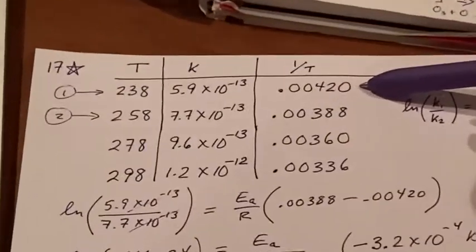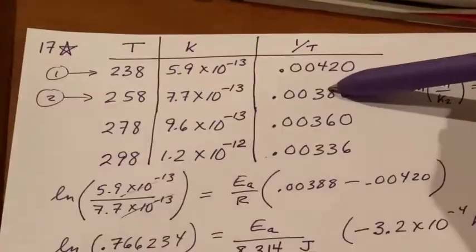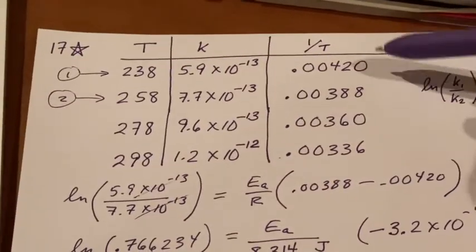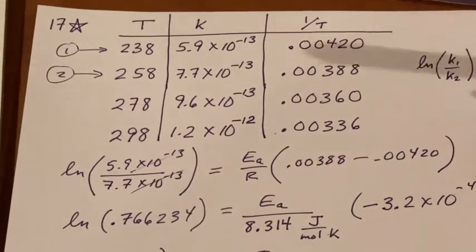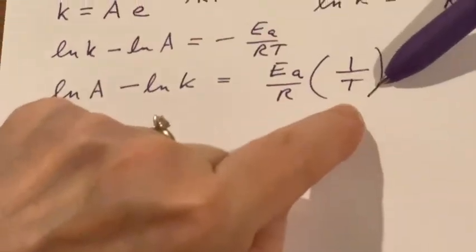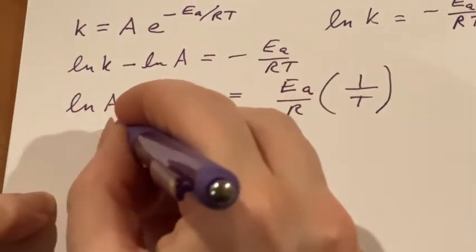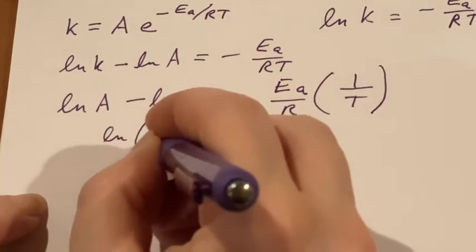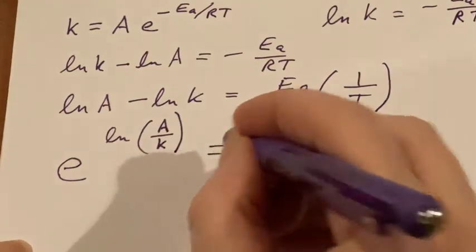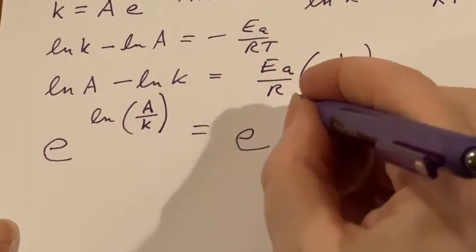Now I can pick just one of the ones, and I'm going to go ahead and choose this one because it was one of the two that I used when I was calculating E sub a. So I'll go ahead and use this value and put it in place of the one over T and set this up as natural log of A over k equals e to the Ea over R one over T.